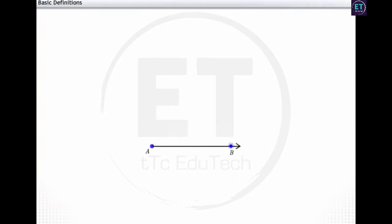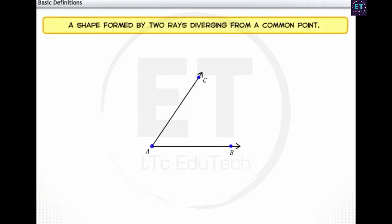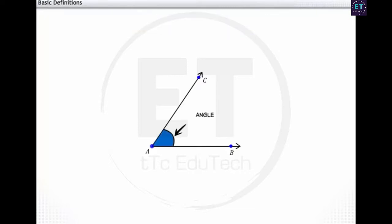Consider the two rays AB and AC originating from the same point A. This formation brings us to an important term in geometry, the angle. The rays that form the angle are called the arms of the angle. The point of origin or the intersection is called the vertex of the angle. The size of an angle is measured in degrees. We will now learn more about angles.